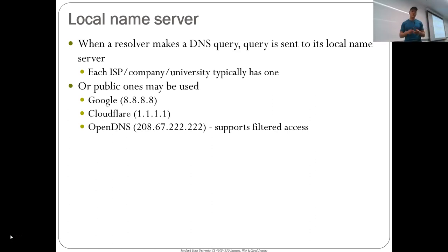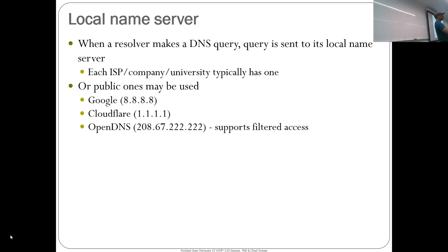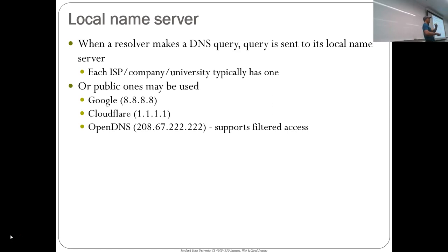The local name server takes queries from the client and forwards them, and if it has the lookup cached, it can resolve it locally. If this entire classroom goes to Google.com, the local name server can resolve that name once and then be done with it for the rest of the class — it doesn't have to forward that request into the hierarchy after the first time. You could have your machine query the hierarchy directly, but the reason you'd point to 1.1.1.1 or Portland State's local DNS server is because many people here are looking up the same names.